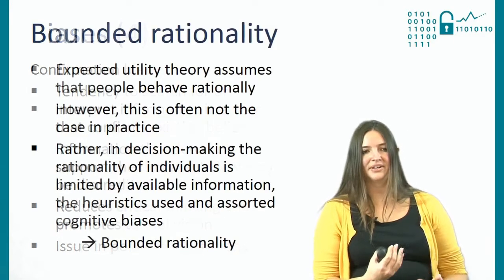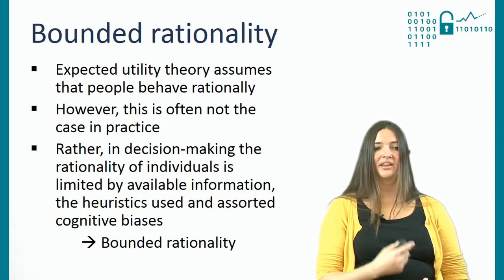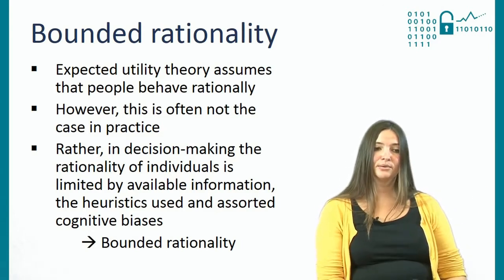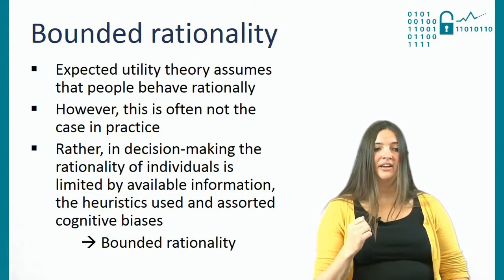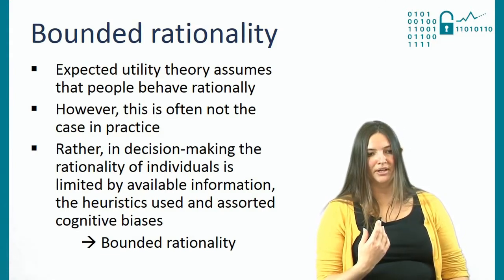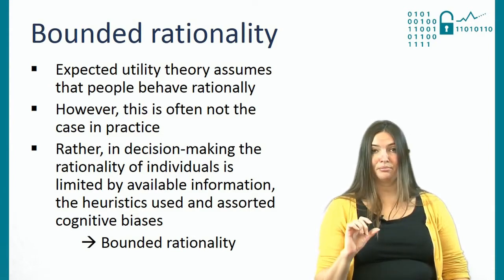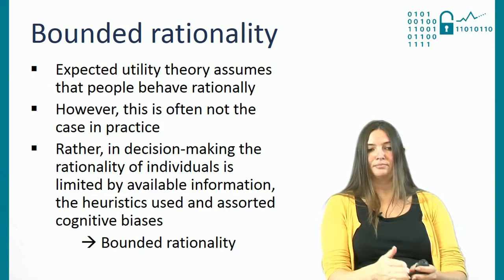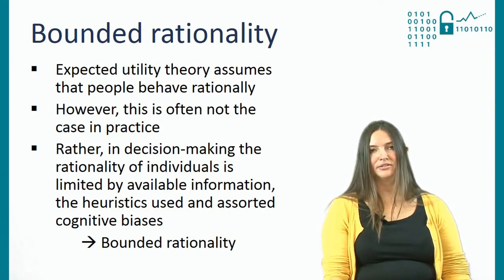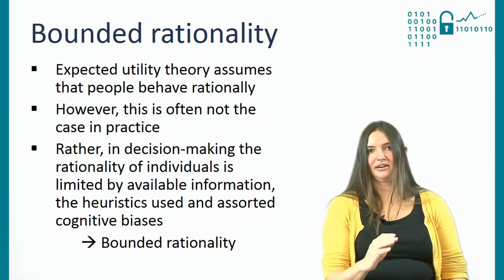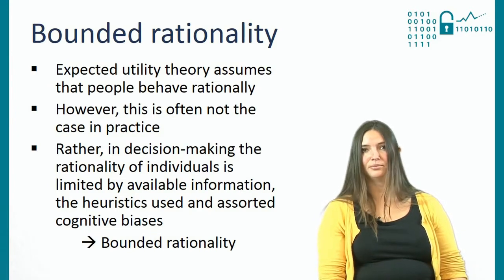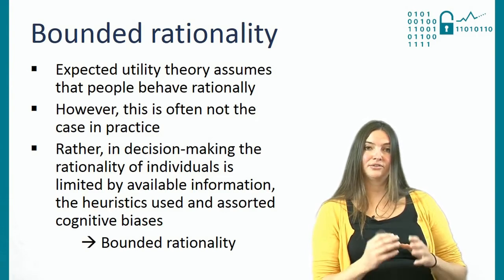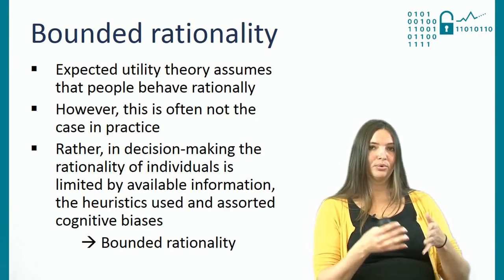All of this leads to bounded rationality. The expected utility theory discussed in the first section assumes that people behave rationally. However, this is often not the case in practice because people, when making decisions, do so based on limited available information using heuristics, and there are certain biases associated with using those heuristics. This creates, instead of objective rationality, a bounded rationality based on the individual.